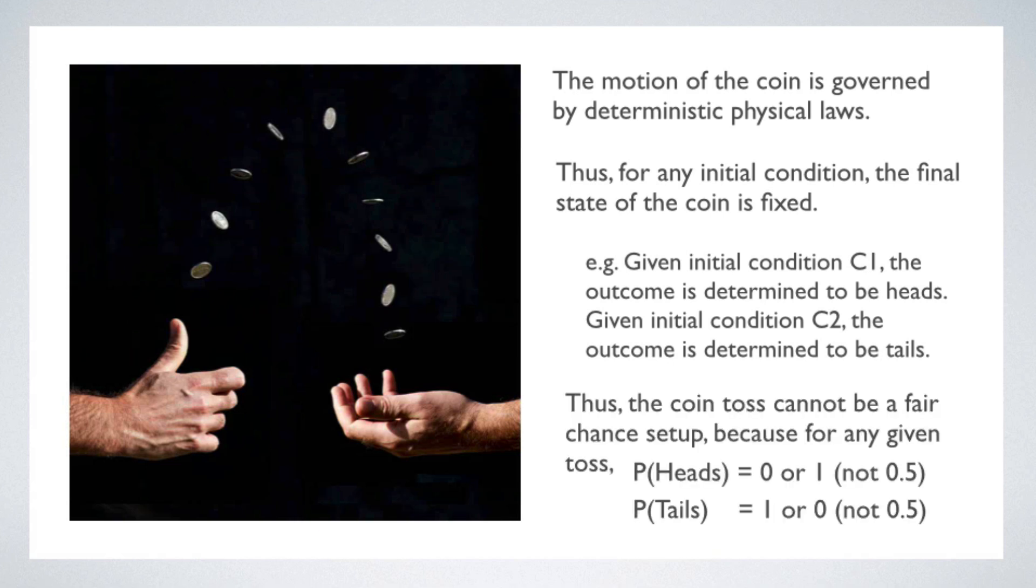But if so, then it seems like we should say that the probability of the coin landing heads or tails should be zero or one, depending on the initial conditions, not 0.5. Now, a fair chance setup says that for each trial, each outcome has an equal chance of showing up. But this isn't the case for a real coin toss governed by deterministic laws. Each outcome doesn't have an equal chance of showing up. So we conclude that a real coin toss can't be a fair chance setup if its behavior is governed by deterministic physical laws.